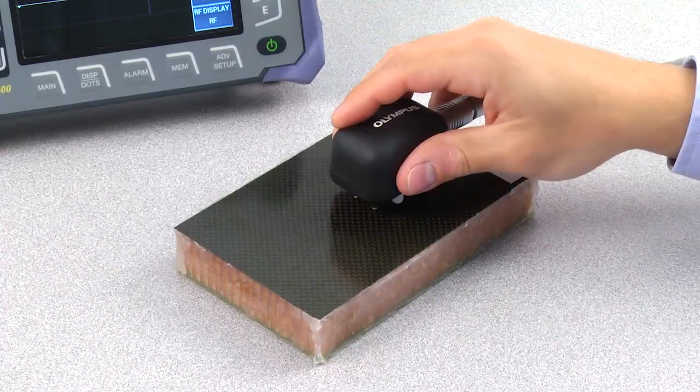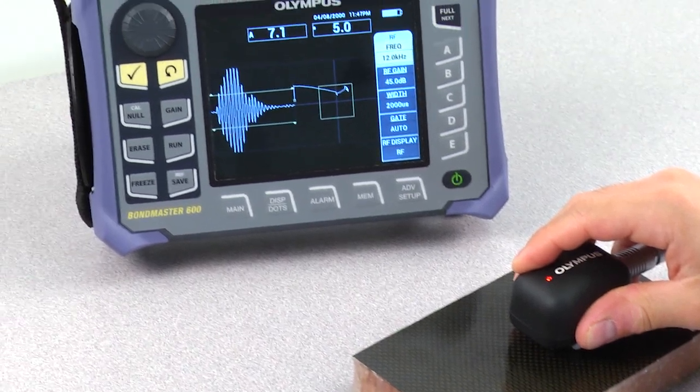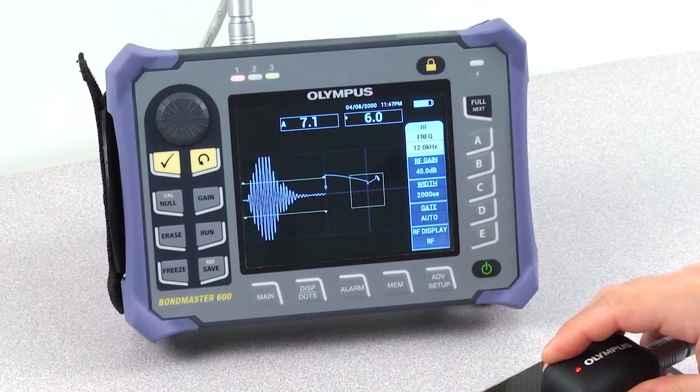This video will demonstrate how to configure the Bondmaster 600 in pitch catch mode to detect disbond in honeycomb composite.